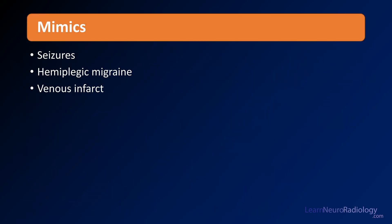What are some mimics that you have to worry about? There are a couple of things that can present with stroke-like symptoms, namely seizures, hemiplegic migraine, and venous infarct. Let's take a look at those individually.